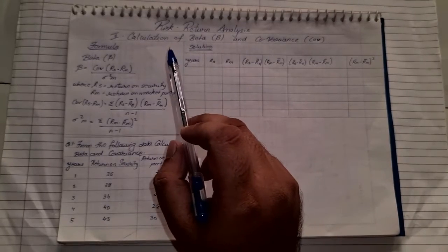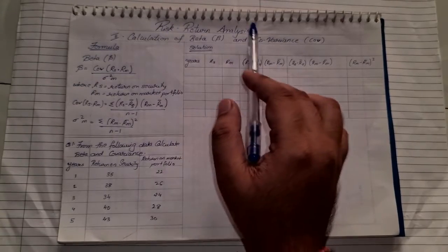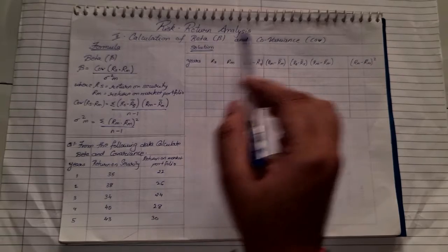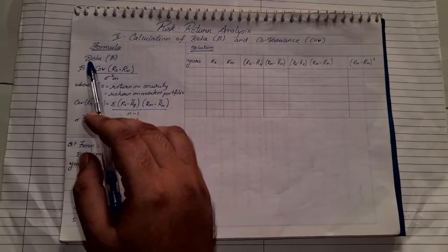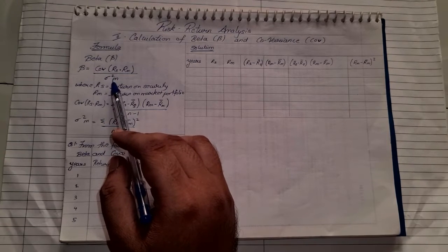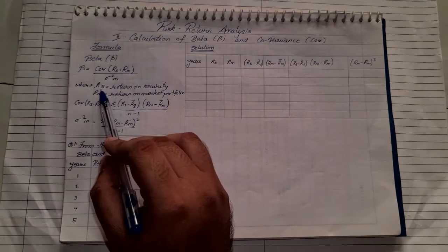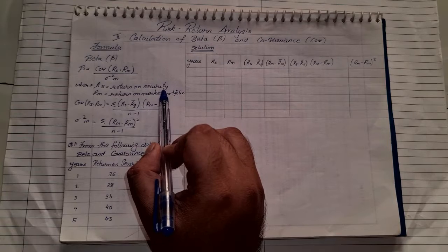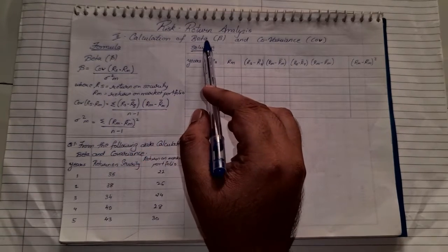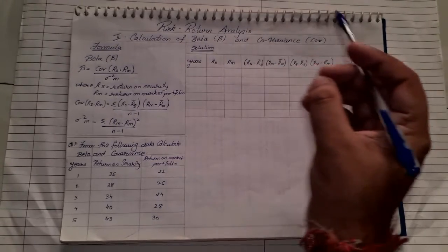Now let us see how to calculate beta and covariance under the chapter Risk and Return Analysis. Before solving, let us see the formulas. Beta formula is covariance upon standard deviation square M, where covariance is RS into RM. RS stands for Return on Security, RM stands for Return on Market Portfolio. Always remember, whenever you are calculating beta and covariance, you are comparing the security return with the market return.